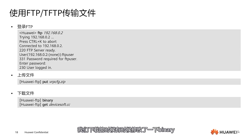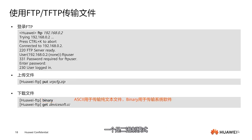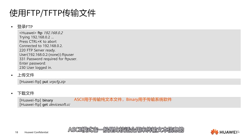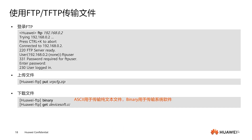IDS is an intrusion detection system. For example, if it detects an AP constantly sending useless or attack messages, it will directly add the AP's MAC address to the blacklist — this is the intrusion detection and prevention system with automatic blacklist addition. Another option is the globally effective blacklist, which we can manually add to.